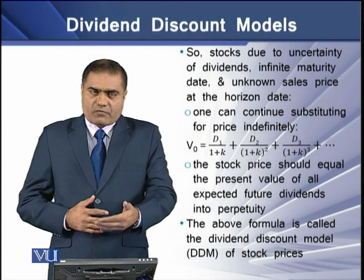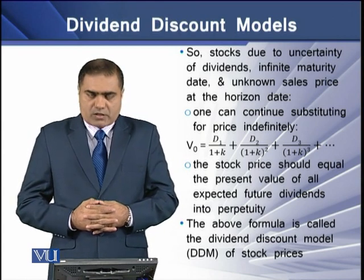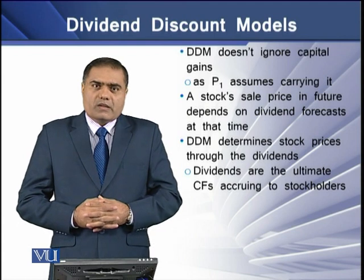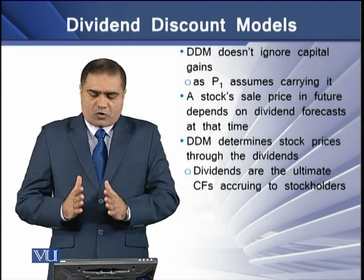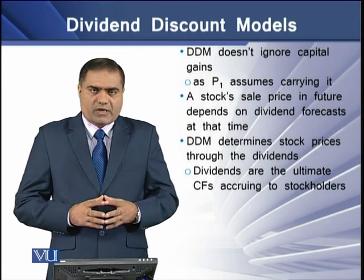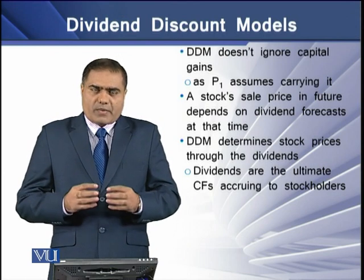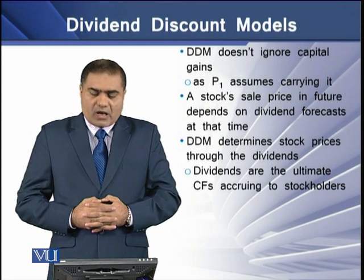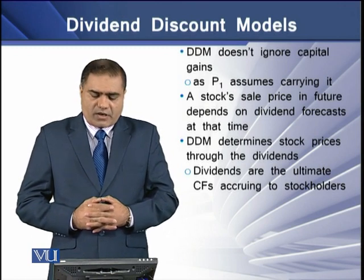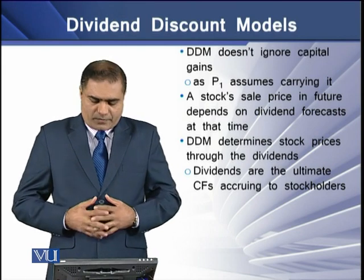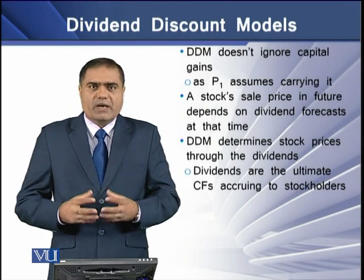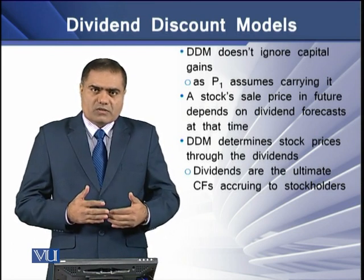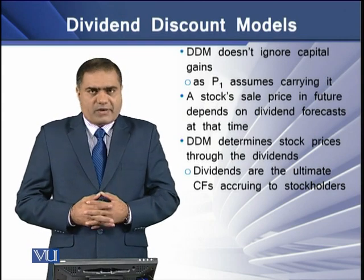This perpetuity formula is called the dividend discount model, or DDM, of stock prices. The dividend discount model does not ignore capital gains — in effect, the price at the end of the year, P1, assumes capital gain is included within it. A stock's sale price in the future depends on dividend forecasts at that particular time horizon. The dividend discount model determines stock prices through dividends, because we only have cash flows in the form of dividends, and dividends are the ultimate cash flows used for determining the security's value.